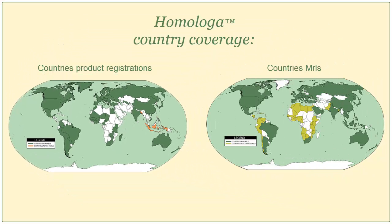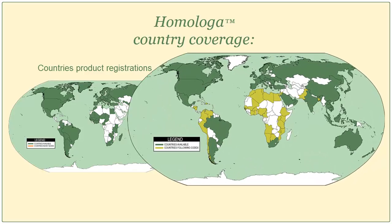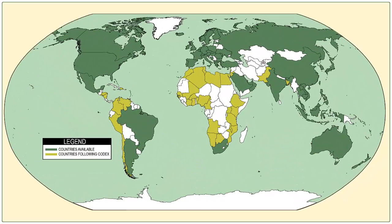On the second HOMOLOGA map, you can see the countries' MRLs. For all the countries marked in green, MRL information is available. The countries marked in light green represent the countries that use the Codex MRLs.